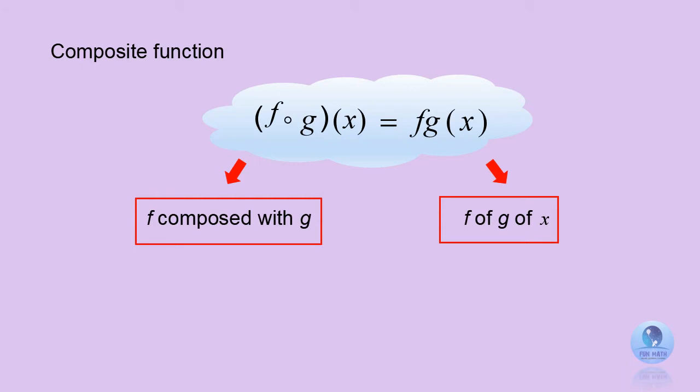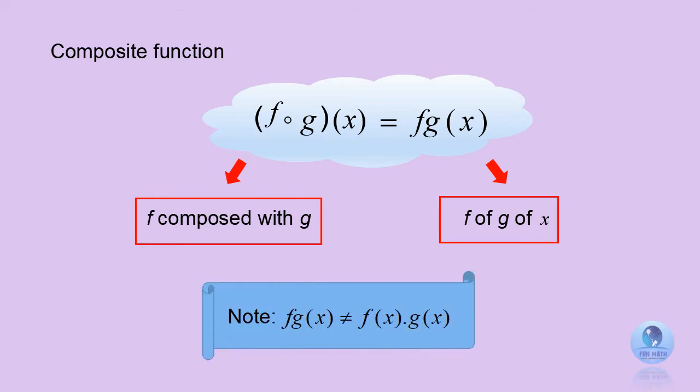A composite function can be written as f composed with g, or in simplified form, f of g of x. In this example, the rightmost function g of x is called the inner function, while the leftmost function f of x is called the outer function. Please note that f of g of x is not equivalent to f of x multiplied by g of x.